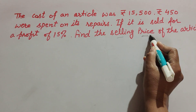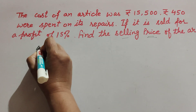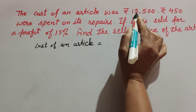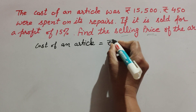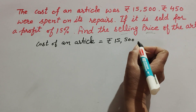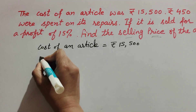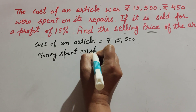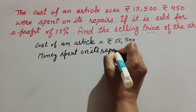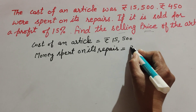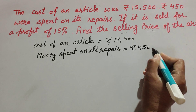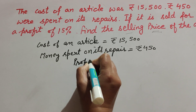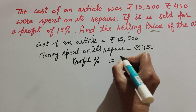We need to find the selling price of the article. The given values are: cost of the article is Rs 15,500, money spent on its repair is Rs 450, and profit percentage is 15%.